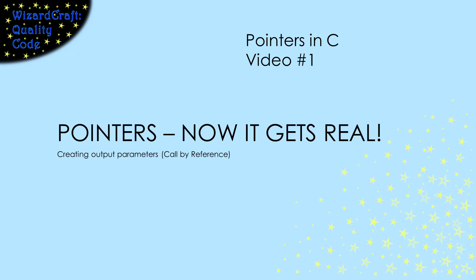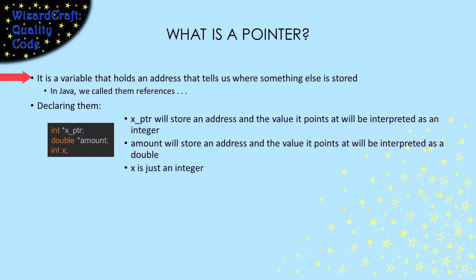Academics like me would call these call-by-reference parameters. A pointer is simply a variable that holds an address of where something else is stored. To declare a pointer, we have to say it's a pointer and tell the compiler how to interpret the location that it is pointing at. So here, I declared a pointer that points at an int.